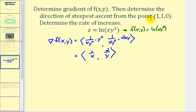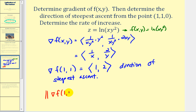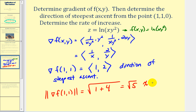To determine the gradient at the point one, one, zero, we evaluate when x equals one and y equals one. This gives us the direction of steepest ascent from the given point: the vector one, two. The actual rate of increase is equal to the magnitude of the gradient at the point one, one — that's the square root of one squared plus two squared, which is the square root of one plus four, or the square root of five, approximately 2.24.